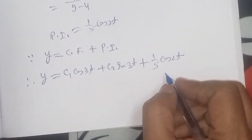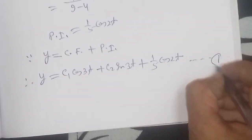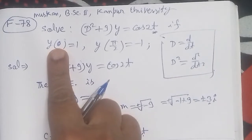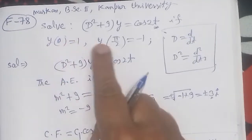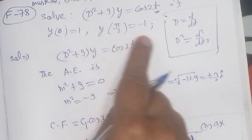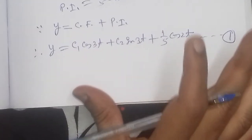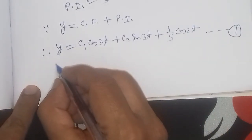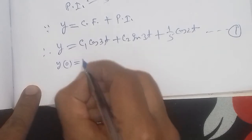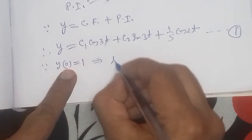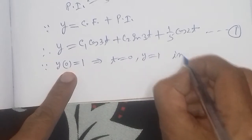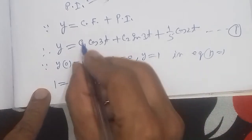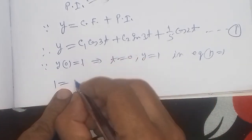Now we apply the boundary conditions. We have the general solution but need to find c1 and c2. Applying the first condition: y = 1 when t = 0. Substituting t = 0 into the general solution: c1·cos(0) + c2·sin(0) + (1/5)·cos(0) = 1.